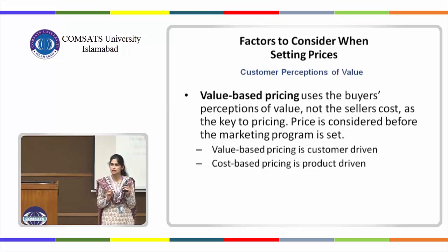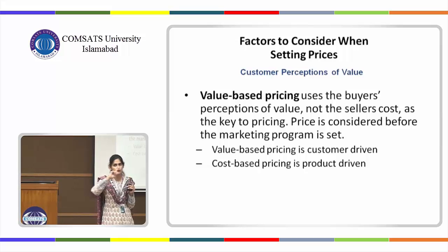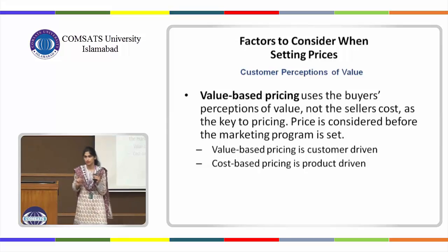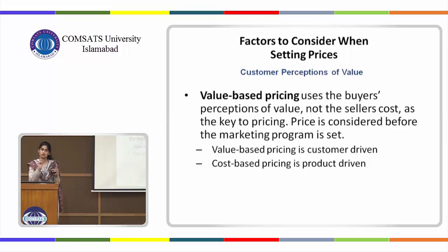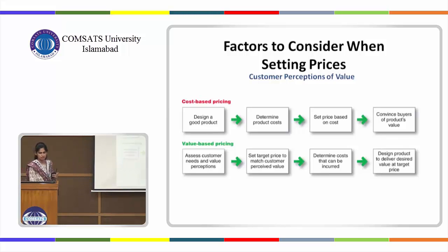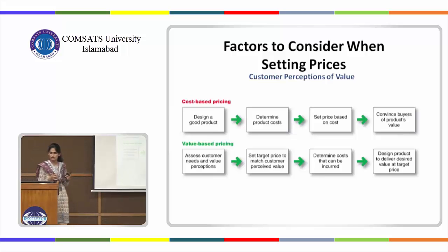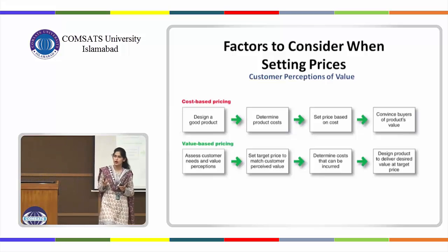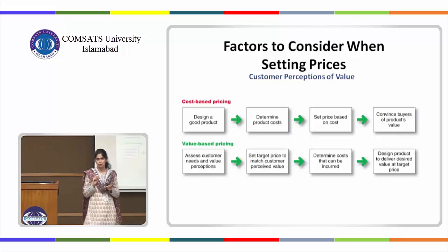For value-based pricing, the starting point is customer value — you start with customer value and then come down to price. Whereas in cost-based pricing, you start with the cost and then come down to the price. In cost-based pricing, you design a good product, determine the product cost, set the price based on that cost, and then convince the customer that the product is of good value.